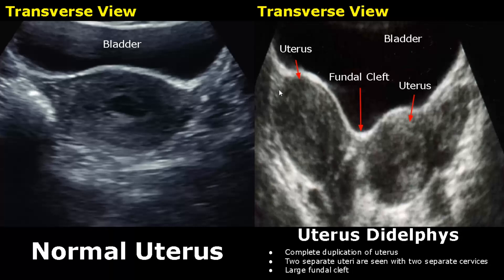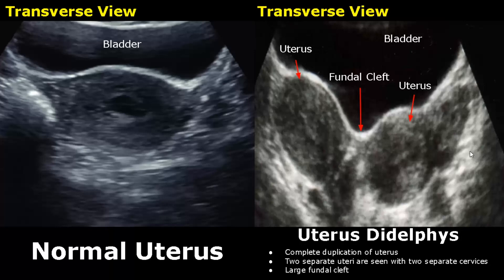Over here is uterus didelphys, in which there is a complete duplication of the uterus. We see two separate uteri with two separate endometrial canals. There is no connection between them. Also, there will be a large fundal cleft present at this location. The fundal cleft is seen better on a 3D ultrasound coronal image.